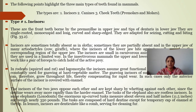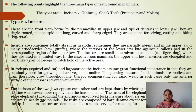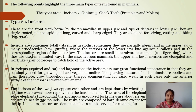There are three types of teeth: incisors, canine, and cheek teeth. Cheek teeth are premolar and molar. Incisors are the front teeth. If we look at the placement of the upper jaw and the lower jaw — the dentaries — these are the front teeth borne by the premaxillary in the upper jaw and tips of dentaries in the lower jaw. They are single rooted, monocuspid, and have long curved and sharp edges.